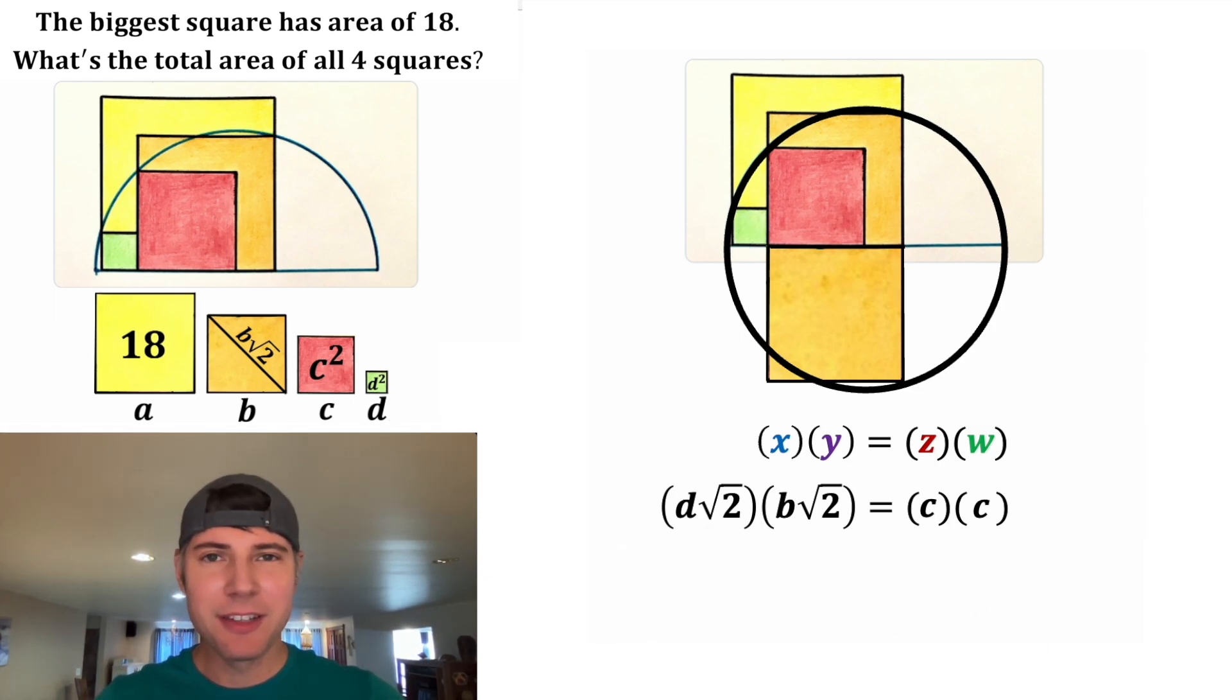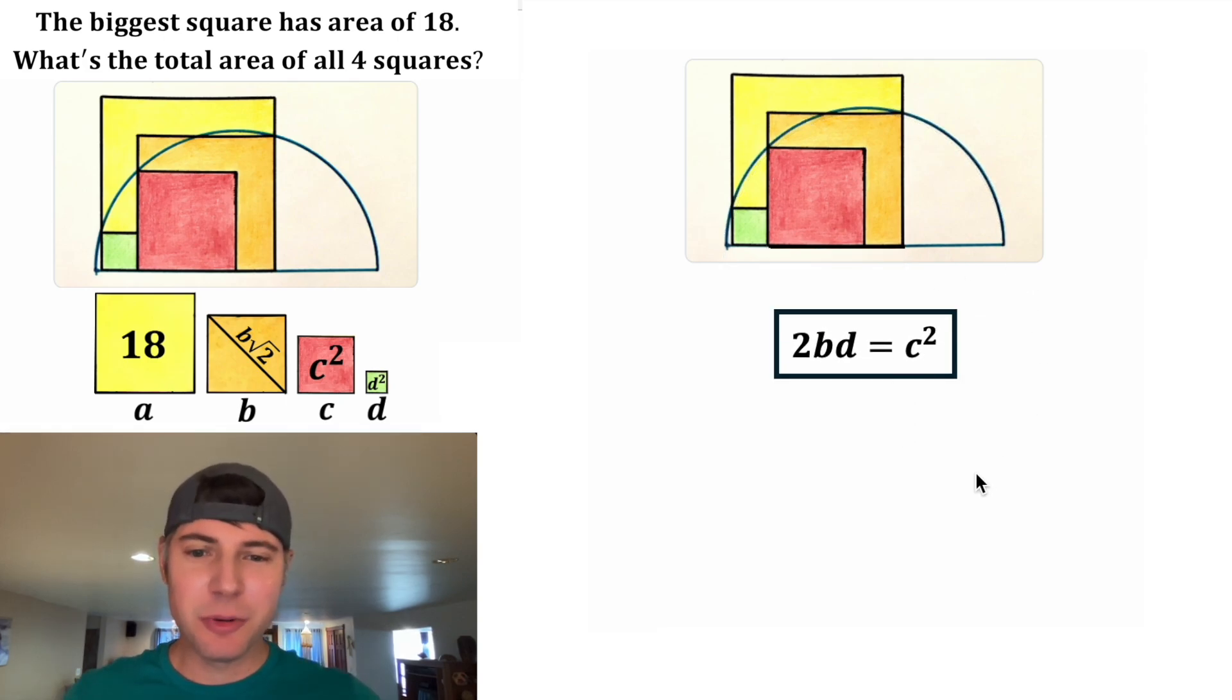Now we can simplify this. For the left-hand side, rearrange this as root 2 times root 2 times B times D. And root 2 times root 2 is equal to 2. So the left-hand side is going to be 2BD. And then the right-hand side is going to be equal to C times C, which is C squared. And C squared is the area of our red square. So this is super important. Let's put a box around it.